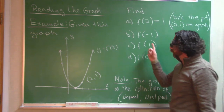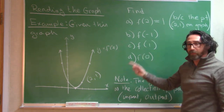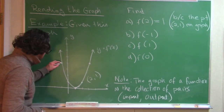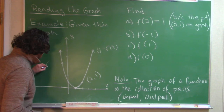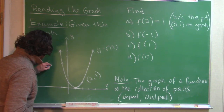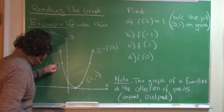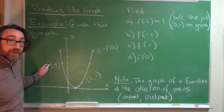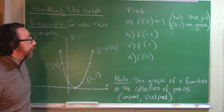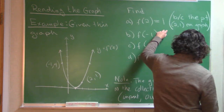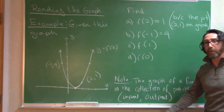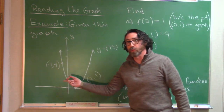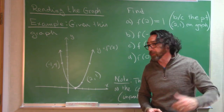f of negative 1 — the input is negative 1. We look for a point on the graph with negative 1 as the x-coordinate, and we see one right here: negative 1 comma 4. That is telling us that if negative 1 is used as the input, we get 4 as the output. Negative 1 goes in, 4 comes out. f of negative 1 equals 4 because negative 1 comma 4 is on the graph.